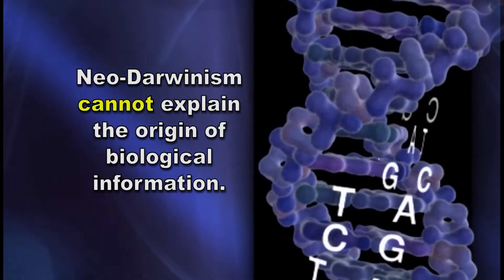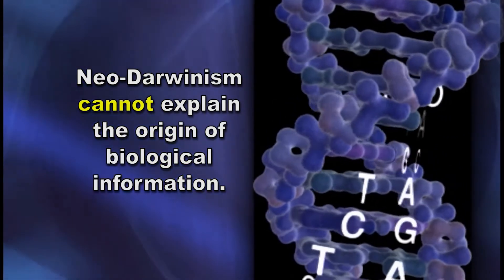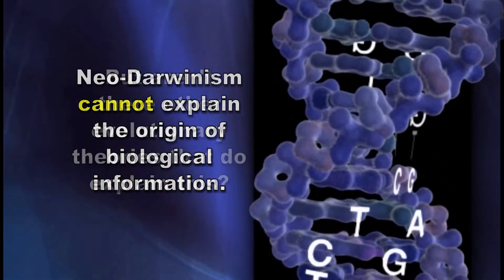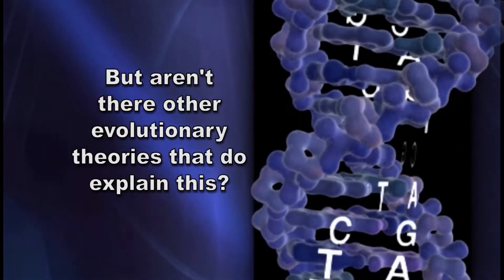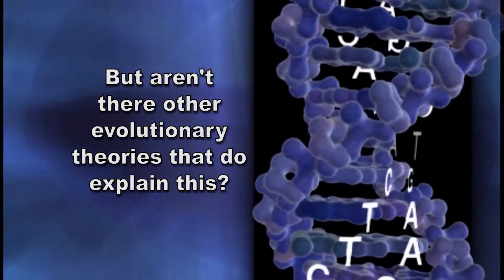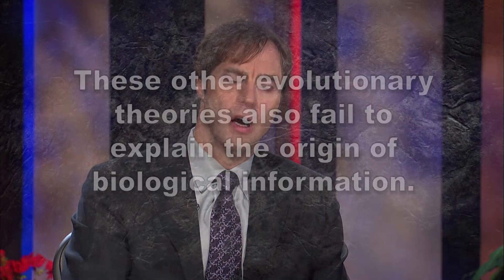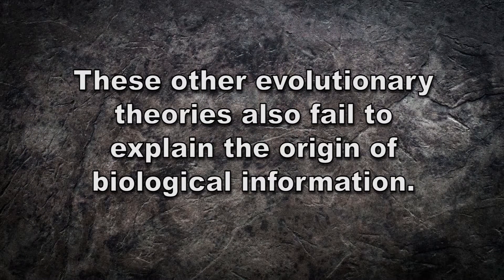In your book you show that Neo-Darwinism cannot explain the origin of biological information. But some people say, aren't there other evolutionary theories that do so? Well, there are other evolutionary theories beyond Neo-Darwinism. And one of the things I show in the book, in chapters 15 and 16, is that these other evolutionary theories in many cases are improvements over Neo-Darwinism, but they too fail to explain the origin of information.